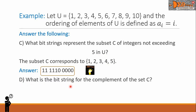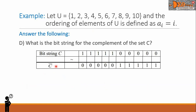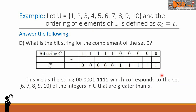Letter D: what is the bit string for the complement of the set C? For the complement, we will just change 1 by 0 and change 0 by 1. So the complement of C is: 0 0 0 0 0 1 1 1 1 1. This yields the string 0 0 0 0 0 1 1 1 1 1, which corresponds to the set {6, 7, 8, 9, 10} — the integers in U that are greater than 5. This is the final answer.